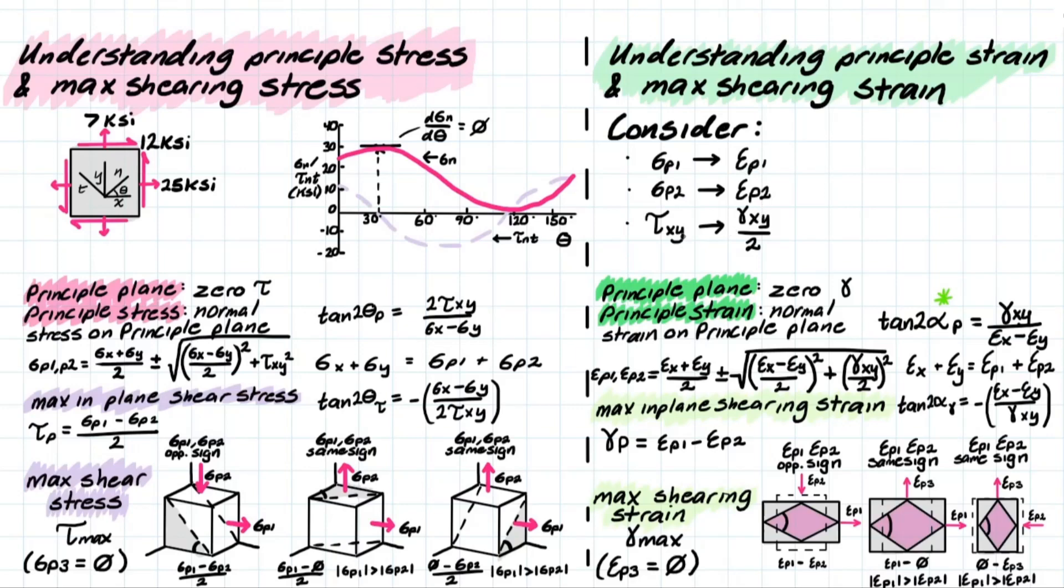It considers our principal stresses and replaces them with normal strains. Then we're also looking at replacing our shearing stress with our shearing strain, which was that shearing strain over 2, because you had the two angles comprising of that size change based on the XY plane. And what defines a principal plane in terms of strain is there's going to be zero shearing strain. That means that the angle or the size change of this element is going to be non-existent for a given orientation based on this alpha P.